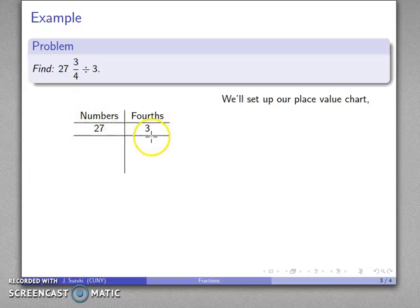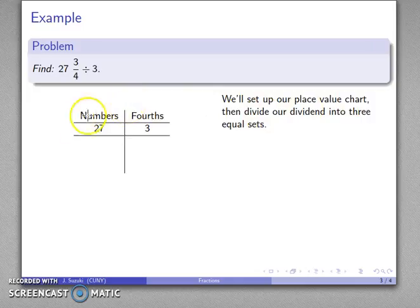Here I have 27 numbers, I have 3 fourths. I'm dividing that by 3, and if I am viewing this as a partitive division, then I want to take what I have and form three equal sets from that.